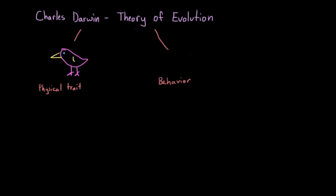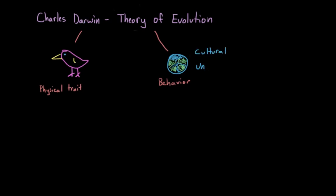We're saying that certain behaviors can also be selected for if they contribute to the fitness of the species. At this point, you might be saying to yourself, there are lots of different human behaviors. How would we know if one is being selected for? The answer is to think about this in terms of cultural universals.